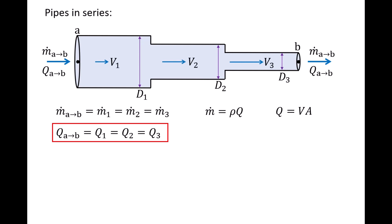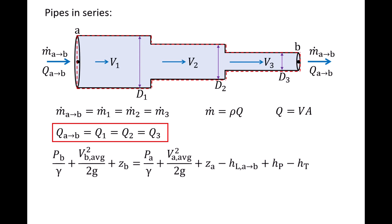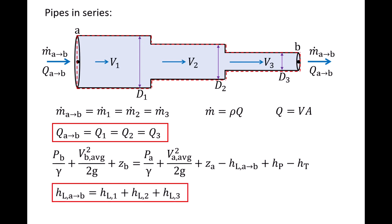Now let's apply the conservation of energy equation from point A to point B. We draw a control volume around the three pipes, denoted by the red dash line, with an inlet at A and an outlet at B. The conservation of energy equation gives: pressure head plus velocity head plus elevation head at outlet B equals pressure head plus velocity head plus elevation head at inlet A, minus the head loss from inlet to outlet HL AB, plus the pump head minus the turbine head. Since the flow must travel through all three pipes, the total head loss is simply the sum HL1 plus HL2 plus HL3.